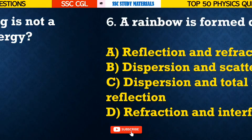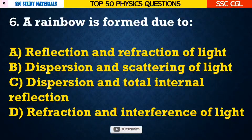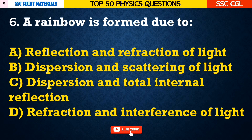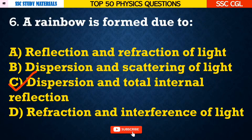Question number 6: A rainbow is formed due to — Answer C. Dispersion and total internal reflection.